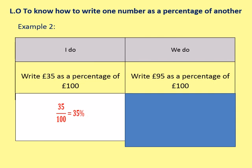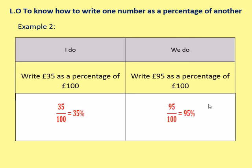Please pause the video there, copy that down and then do the we do. So £95 as a percentage of £100 is 95 out of 100, which is simply 95%. Well done if you've got that right. I hope you're following along so far.